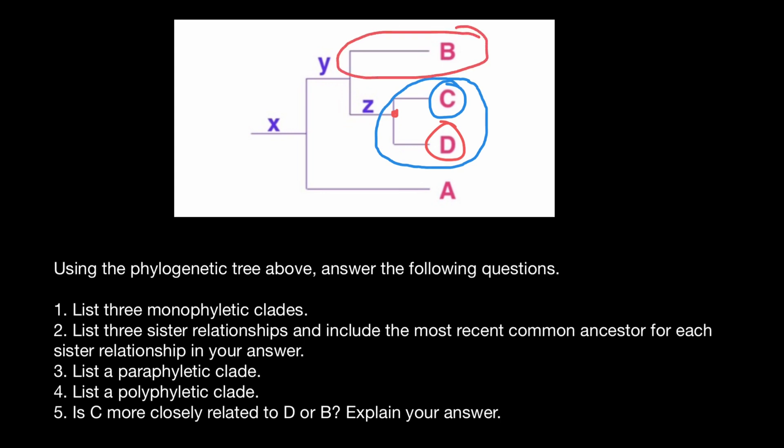And for the monophyletic group which includes descendants of this common ancestor, which includes species B, C, and D, or taxa B, C, and D, the sister group,